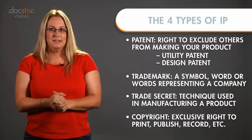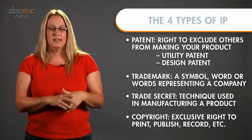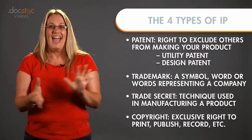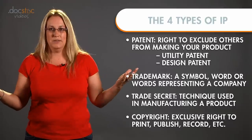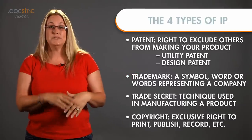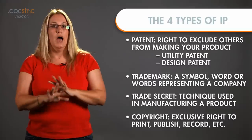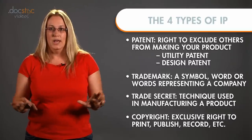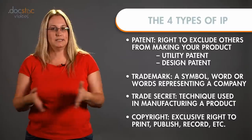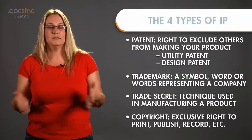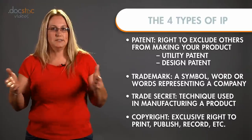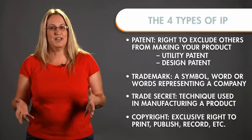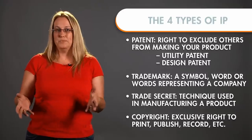So those are the four types of IP: patents, trademarks, copyrights, and trade secrets. You might ask yourself why you should care — because almost half the value of most companies in the US and the EU is intangible assets, and those intangible assets are intellectual property. Make sure you understand what these things are so you can protect them.